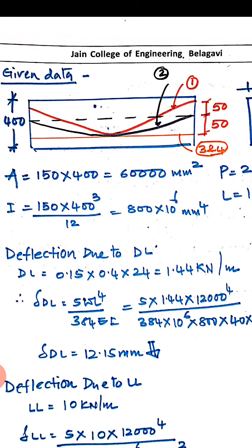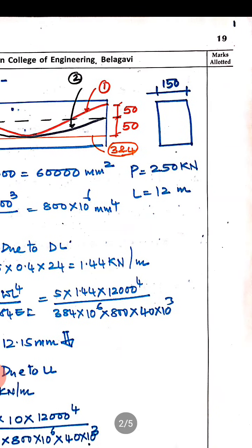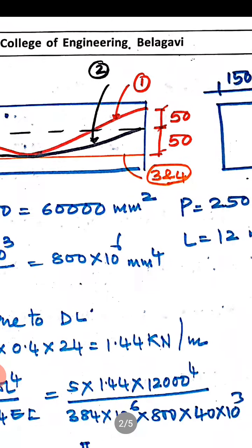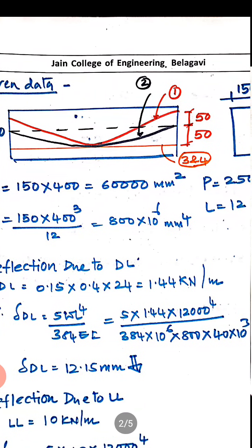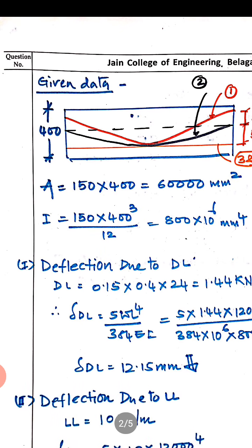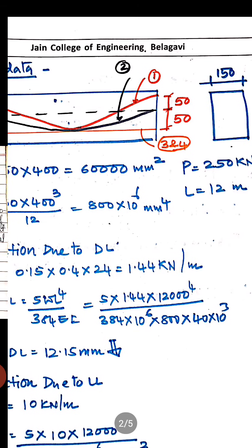So cable 1 and cable 2 are parabolic; cables 3 and 4 are straight. You should draw a rough sketch of the cable profile according to the given eccentricities. Other properties: beam size is 150 × 400 mm, so area can be easily calculated. The moment of inertia I = d³/12. The span of the beam is 12 meters.